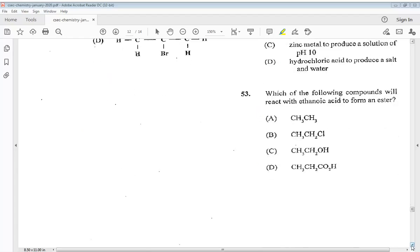Question 53. Which of the following compounds will react with ethanoic acid to form an ester? So it would be CH3CH2OH.